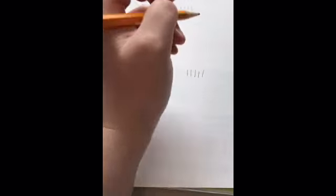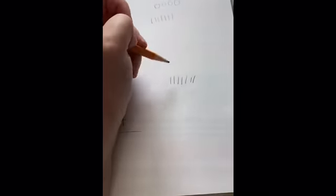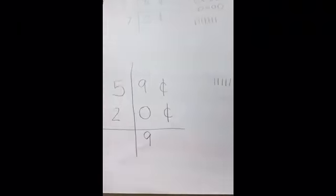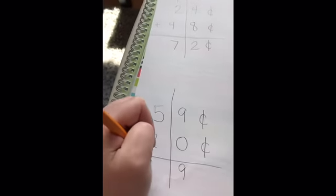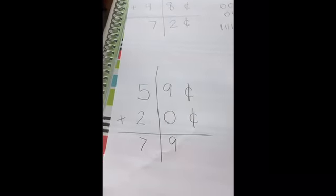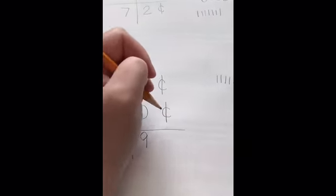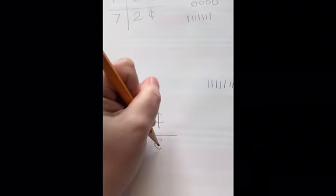Then I have five plus two. One, two, three, four, five, six, seven. So, sorry about that, fifty-nine cents plus twenty cents is seventy-nine cents.